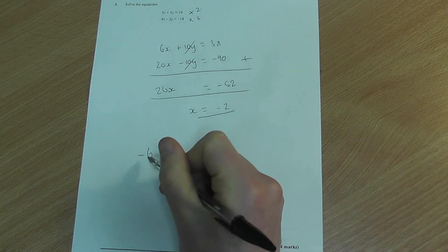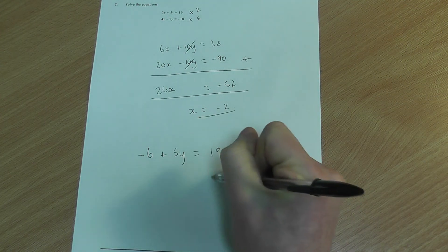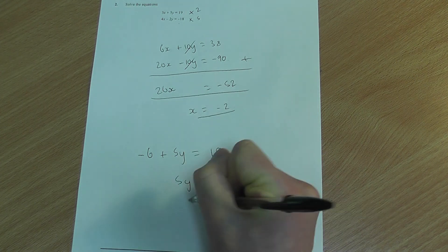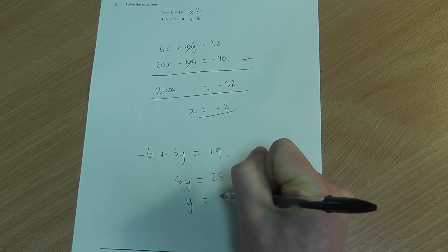Fairly straightforward now. Add the 6 to the 19, gets you a 25 over here. It's equal to your 5y and hence your y is worth 5.